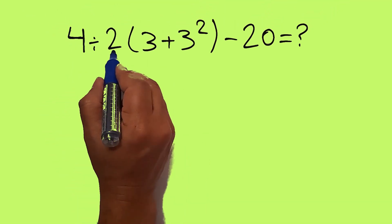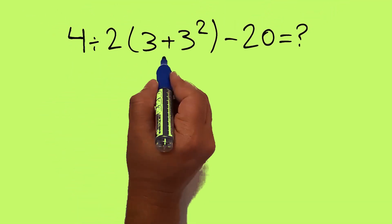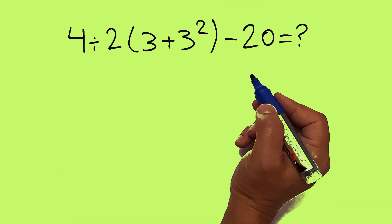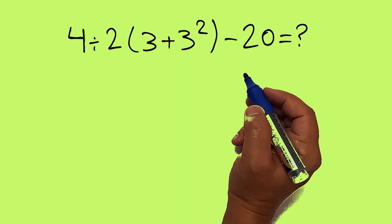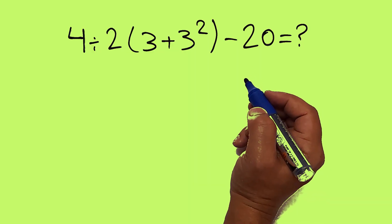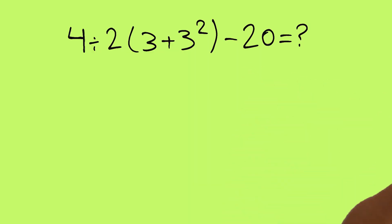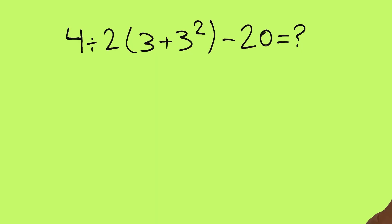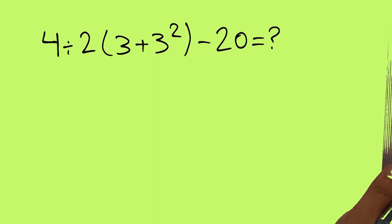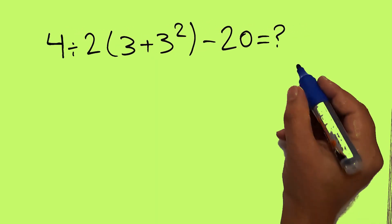4 divided by 2 times 3 plus 3 squared, minus 20. Are you ready to solve? Let's go ahead and get it started. According to the order of operations, which is PEMDAS: